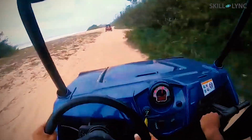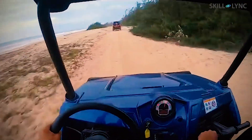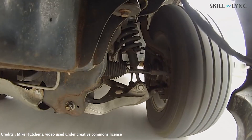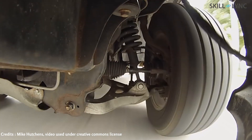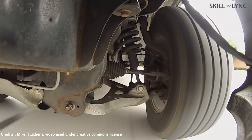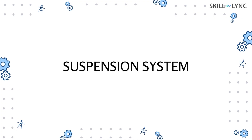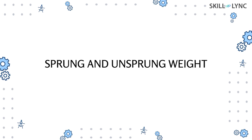These forces stress the buggy's frame and body and provide an uncomfortable ride. To avoid these and protect the parts from shocks, a suspension system is used. In this video, we'll be talking about the suspension system and what exactly is sprung and unsprung weight.